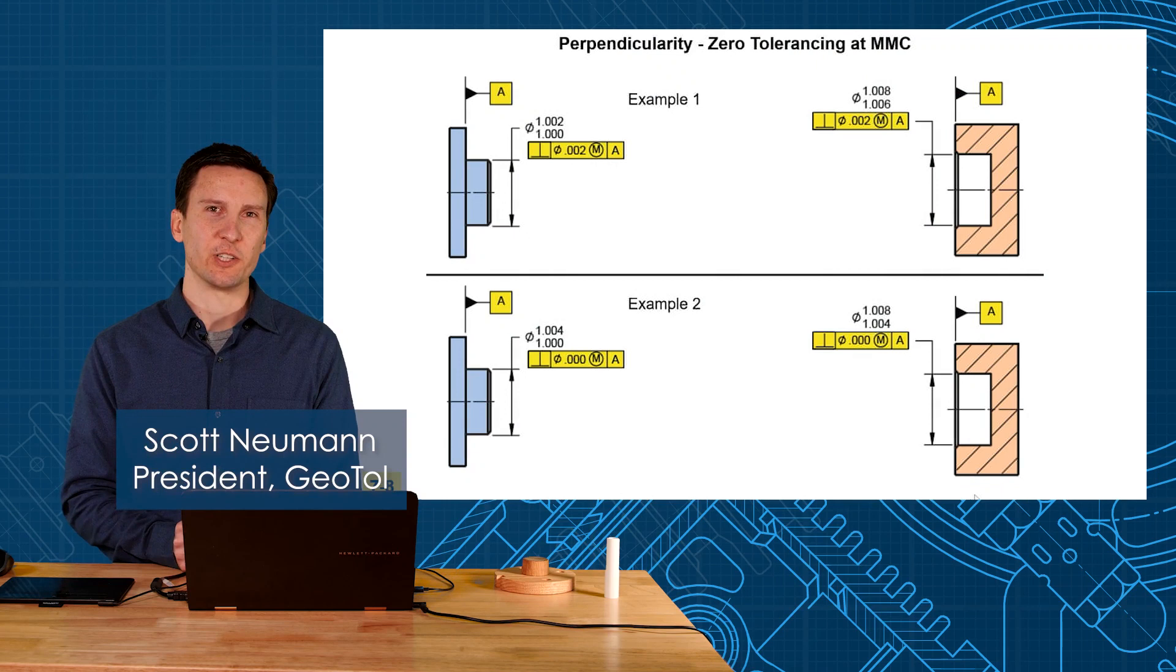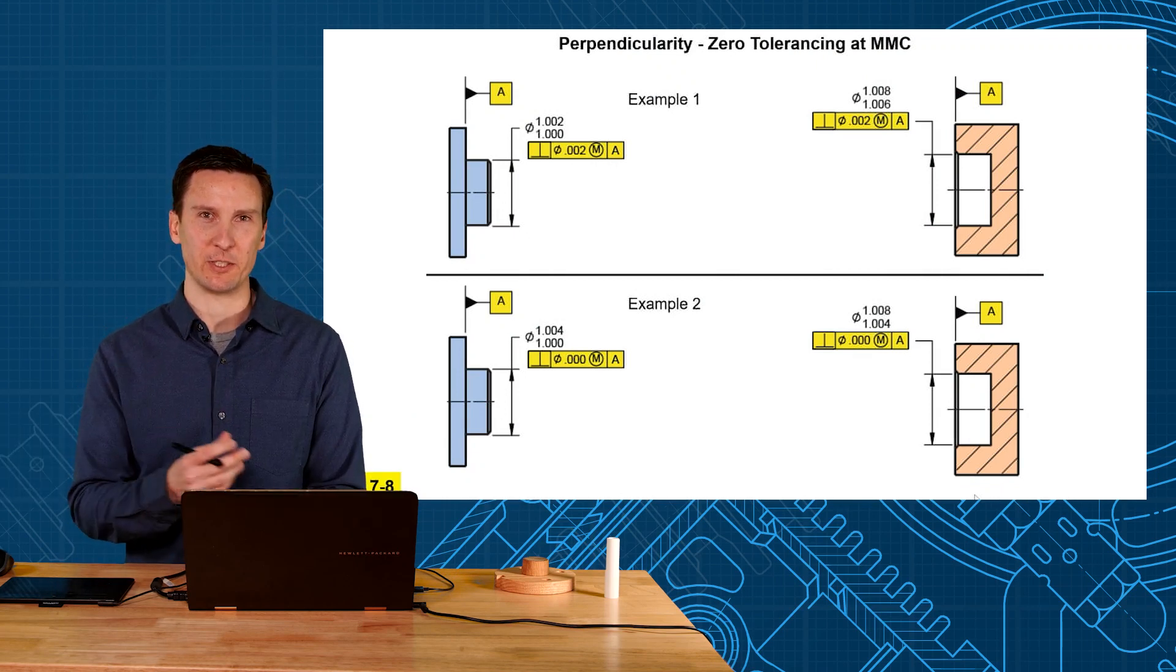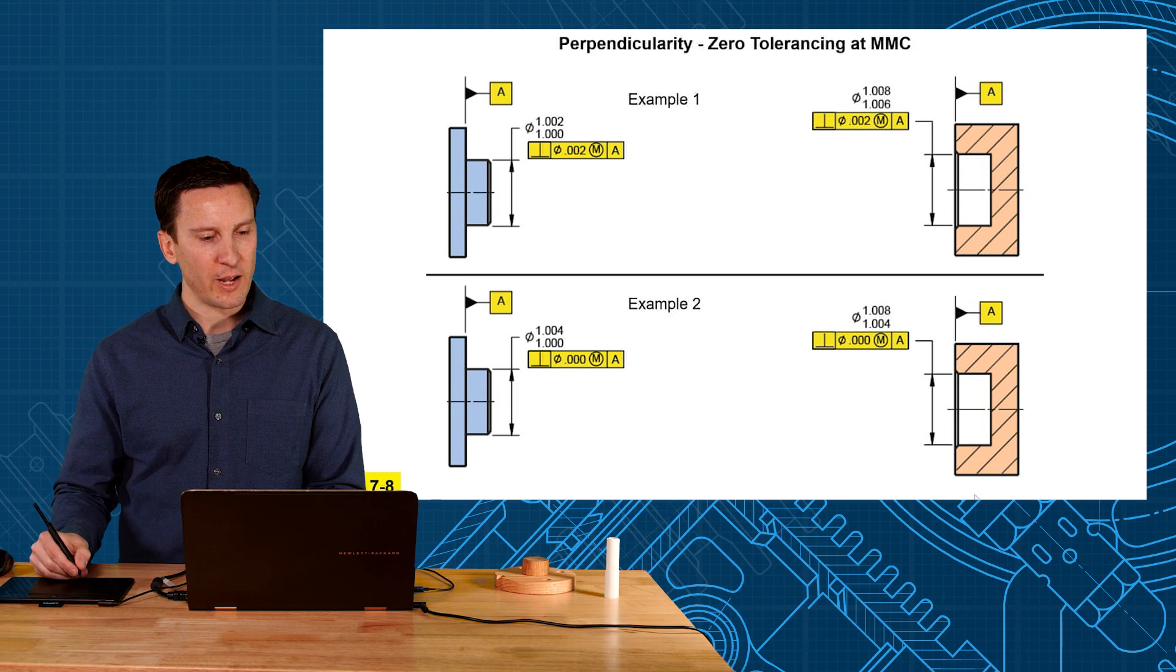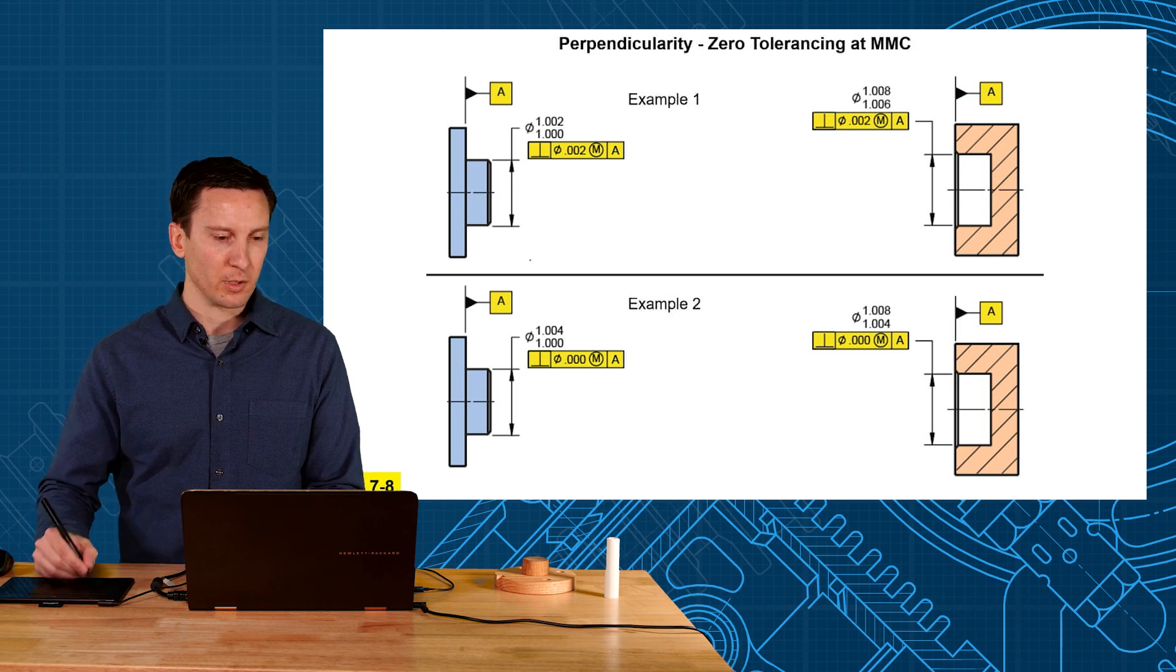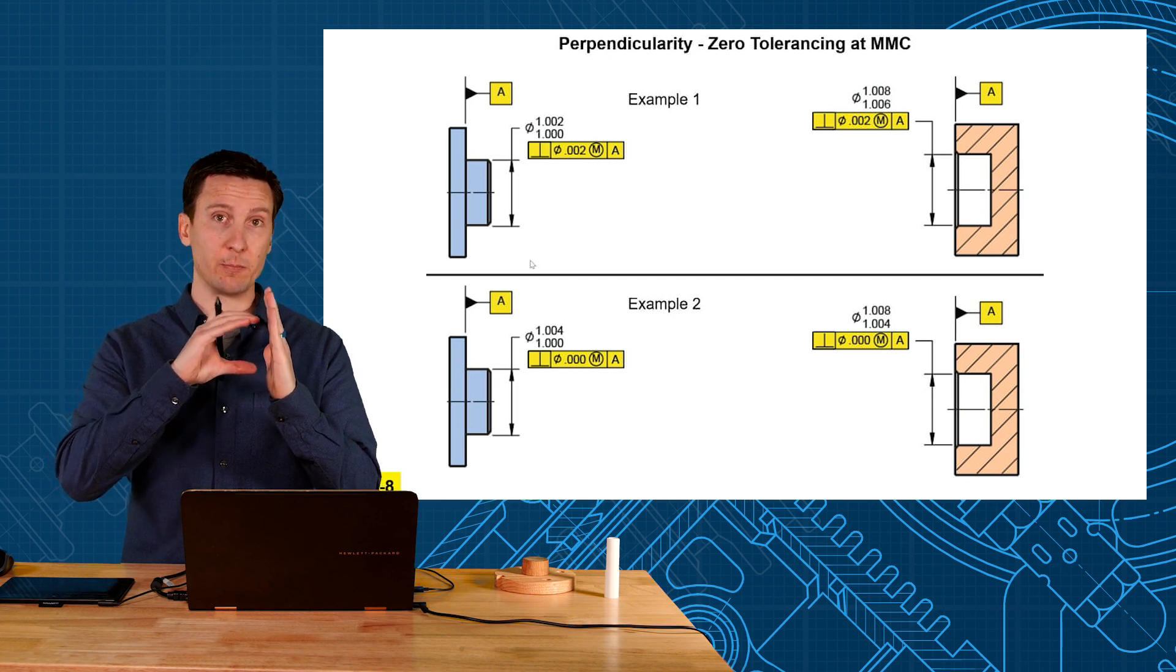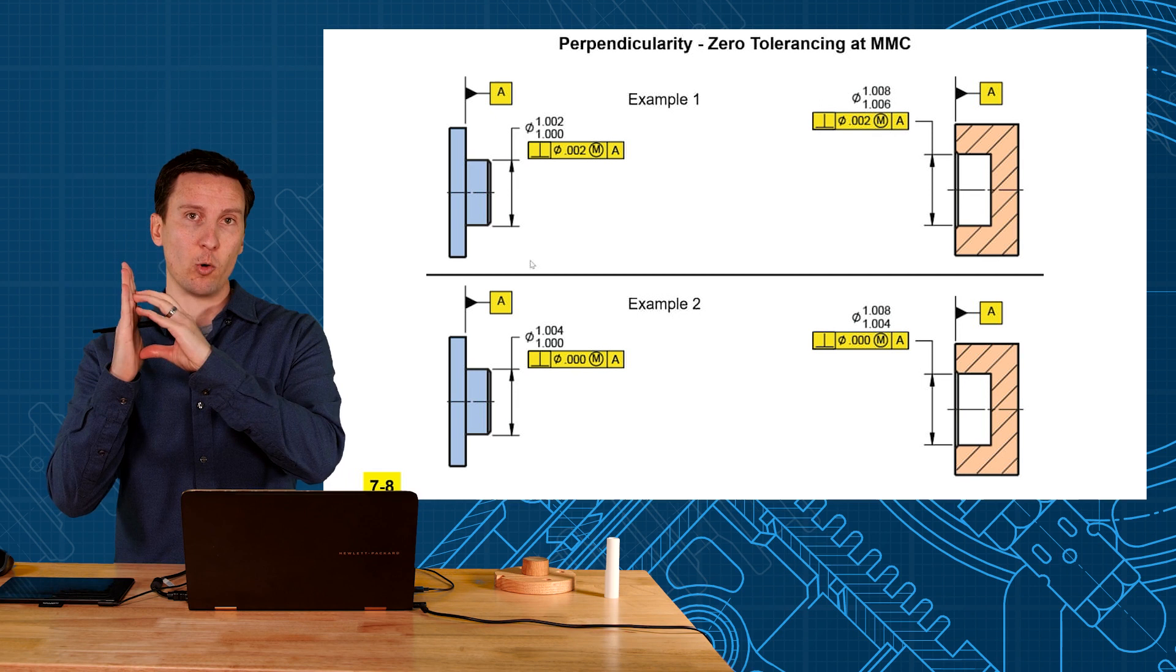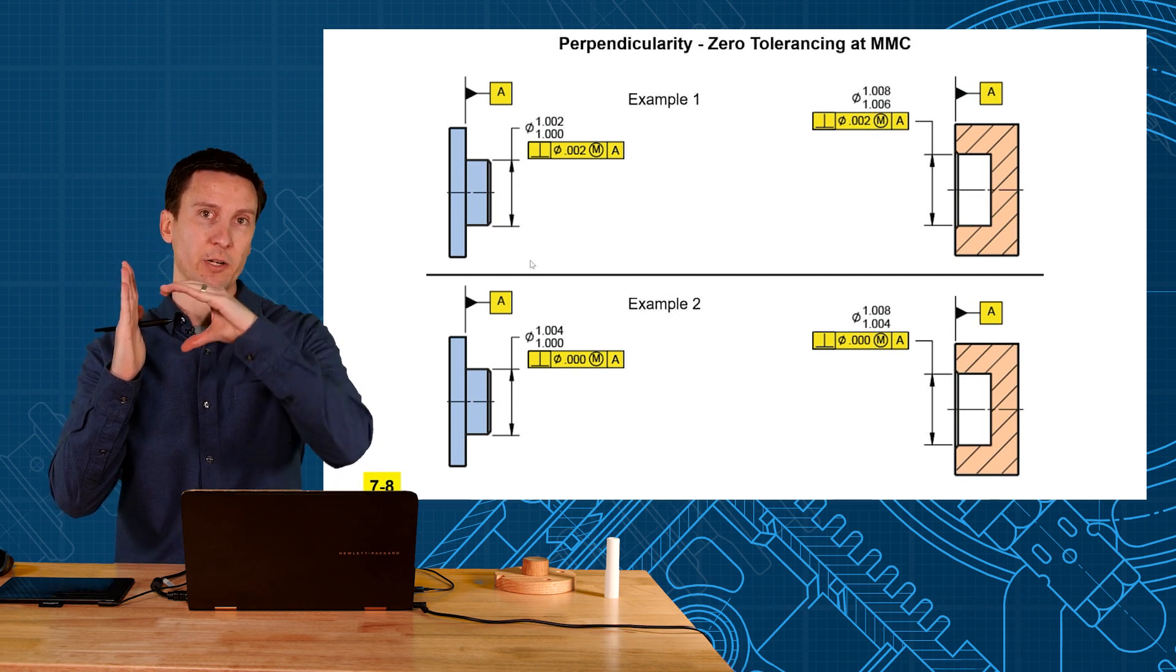Now that we understand virtual condition, I can really show you the benefits of a concept called zero tolerancing at MMC. So here we have two parts going together, pretty simple. A is going to be our face, we have a pin that needs to be sized correctly and then be perpendicular. Mating part, same thing, face is A and the hole has to be sized and made perpendicular.